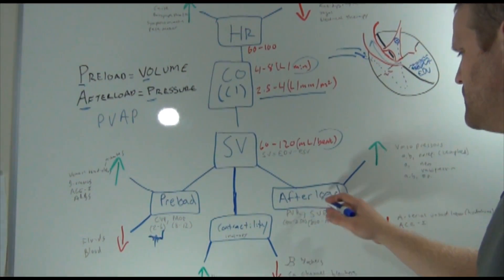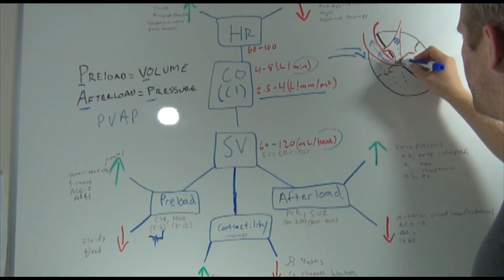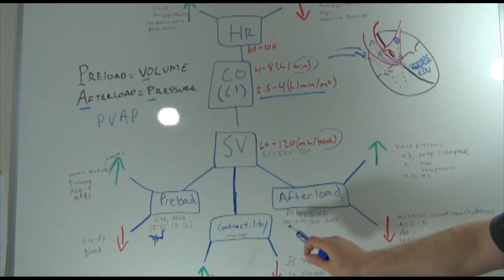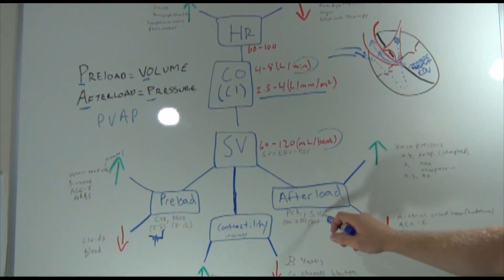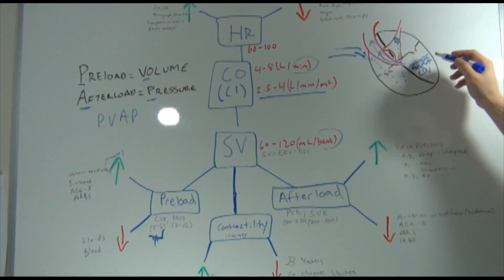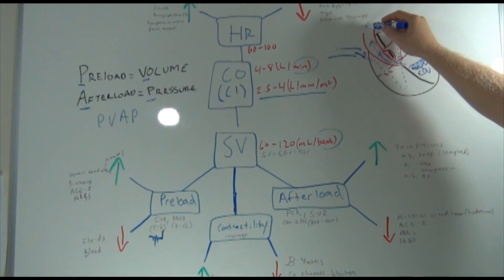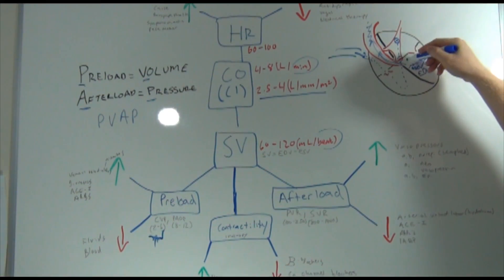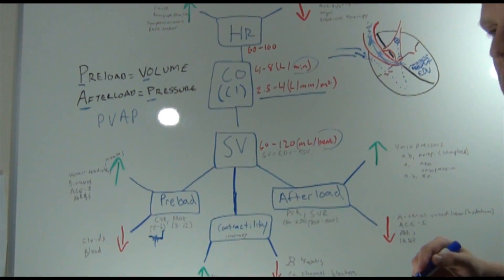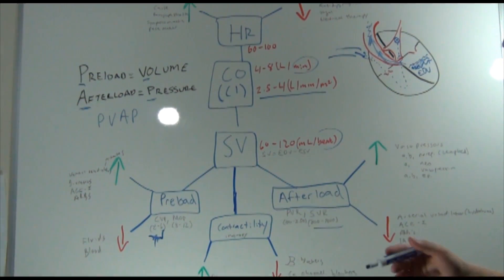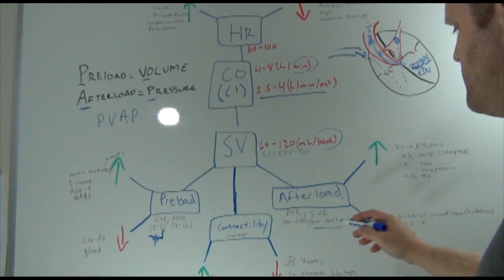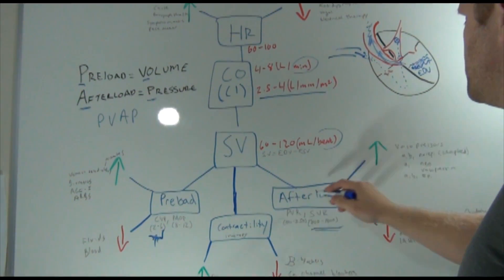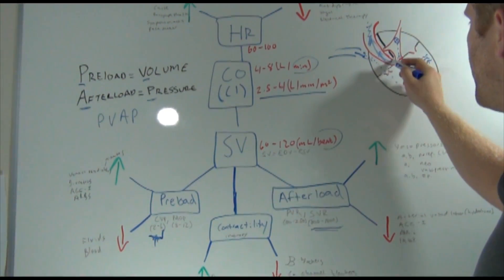Afterload is the pressure required to open the aortic and pulmonic valves and get blood out of the ventricles. It's measured by systemic vascular resistance, or SVR — the resistance in the systemic vasculature that the ventricles squeeze against to push blood into the aorta. Normal SVR is approximately 800 to 1200 dynes.